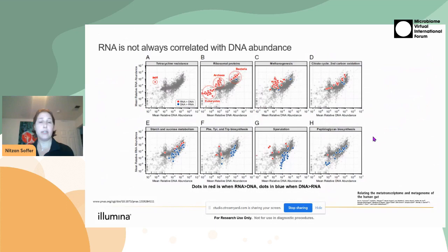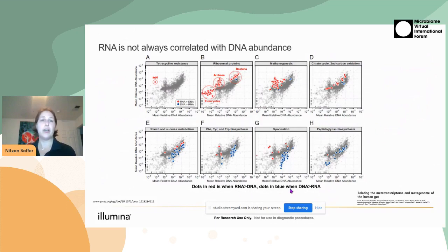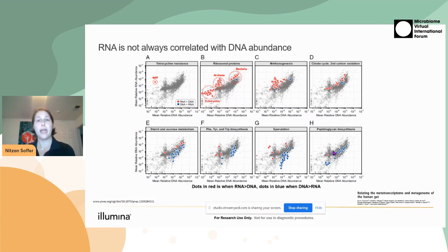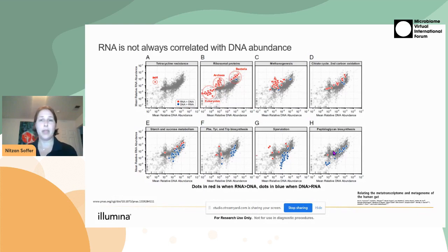Here's a really great study by the Huttenhauer Lab and some people who are presenting today. What they show is that RNA is not always correlated with DNA abundance, and that's important because if you're looking at the genes available in a microbiome, it may make you think there's a lot of gene expression, but this is not necessarily the case. Depending on treatments, environment, and different activities, this may change.